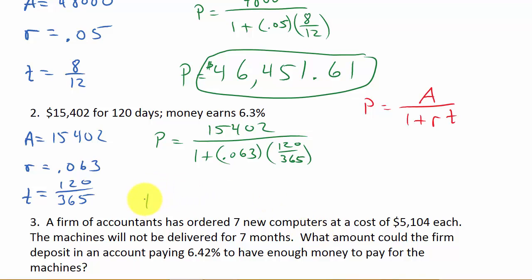And so we get P is equal to, alright, so let's go through the calculator again real quick. We've got 0.063 times 120, equals, divided by 365, equals, plus 1, equals. All right, then, so you should have right now 1.020712329. Now just type in 15,402, divided by, and then recall that last answer. And that should give you $15,089.46, and there's your answer.